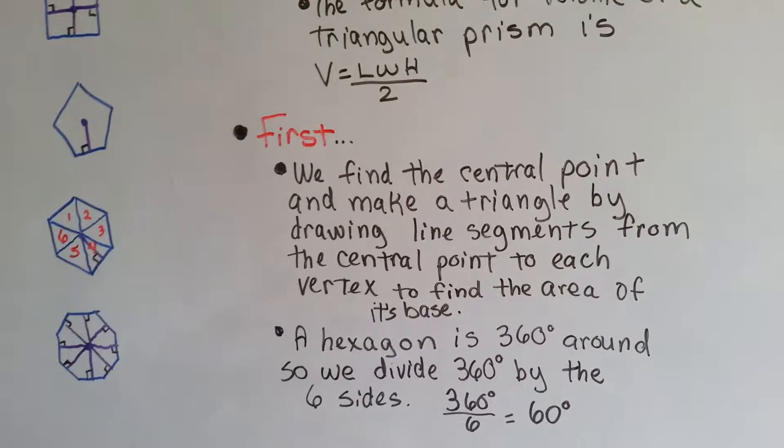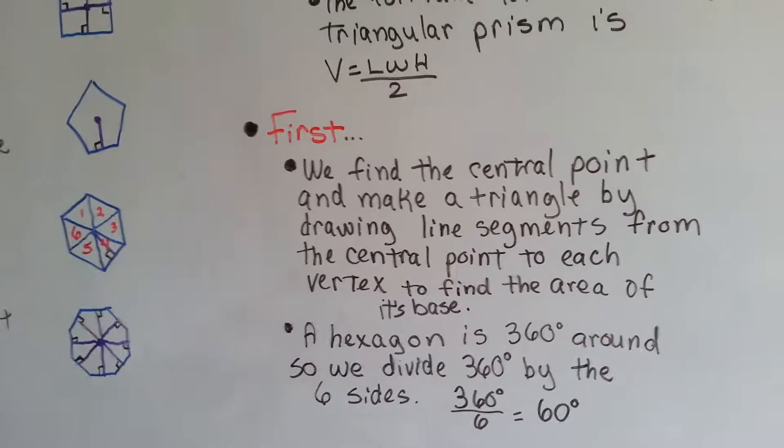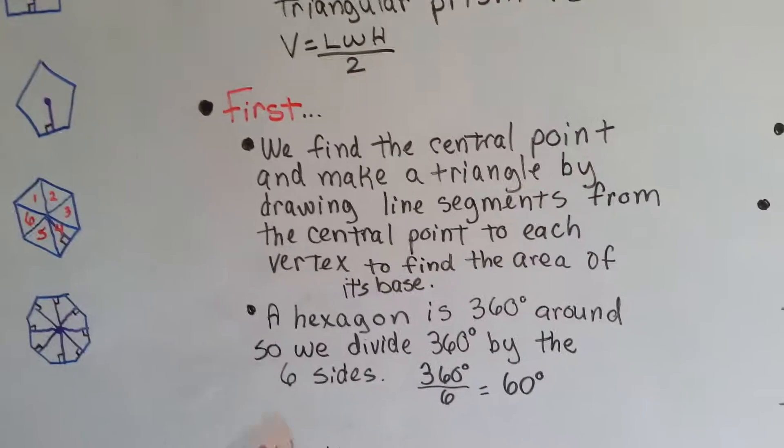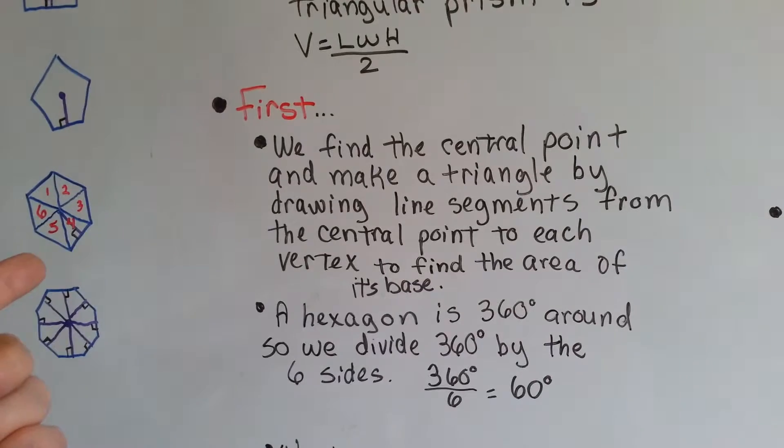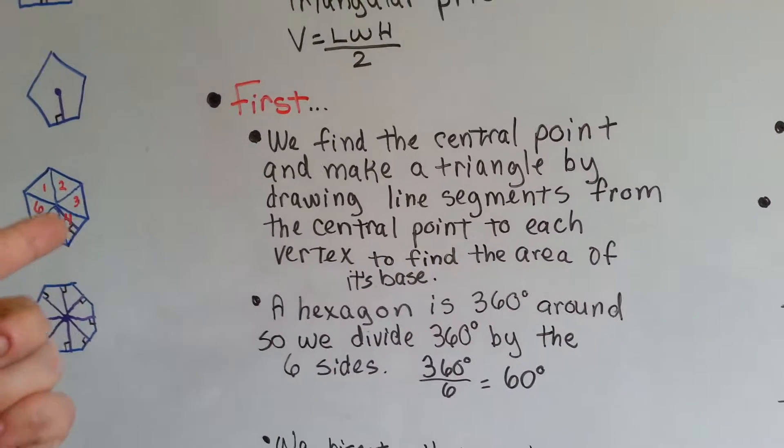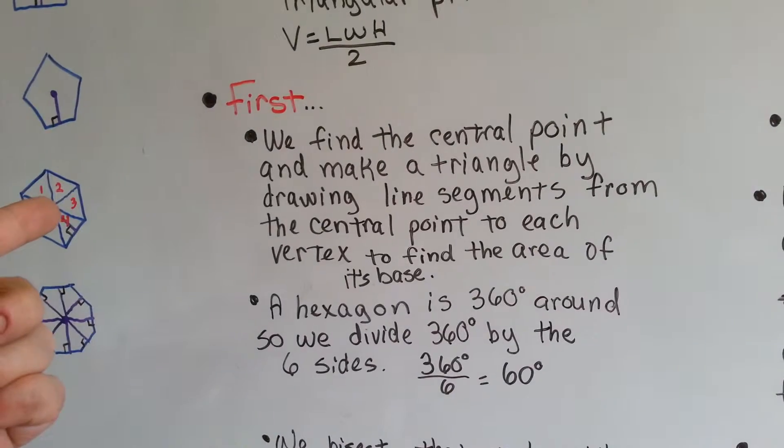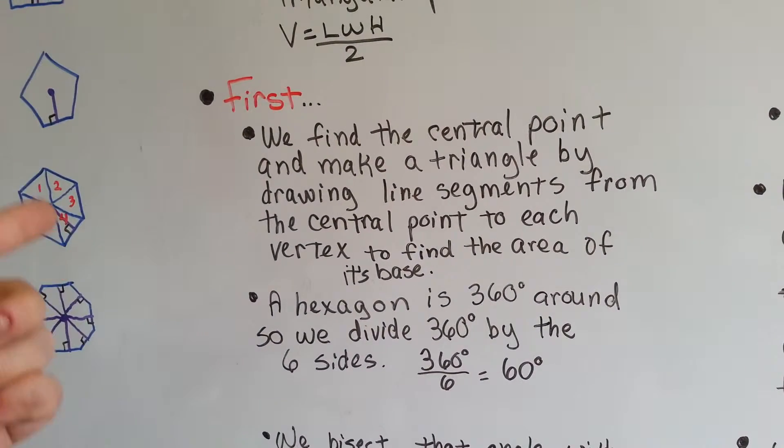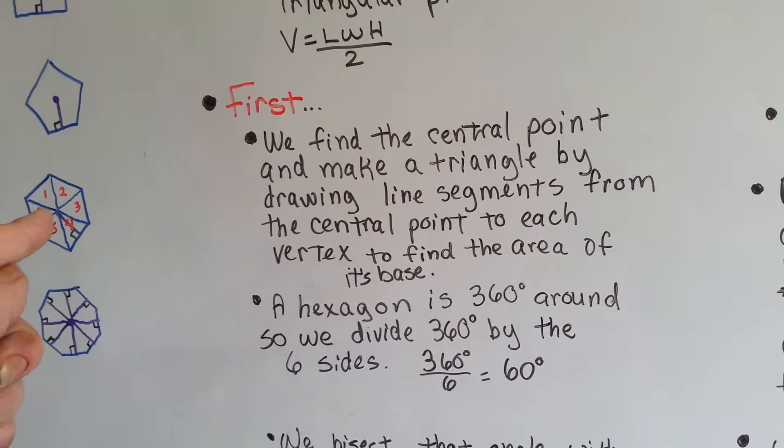That's what's going to take the longest. When we get to that, when we get to know the area, we're going to know the volume right away. It's getting to know the area that we have to do our little work here. We find the central point and make a triangle by drawing line segments from the central point to each vertex.